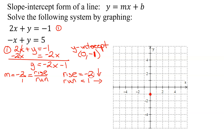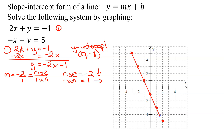Now I need to use my slope of negative 2 over 1. Negative 2 means go down 2, to the right 1. Down 2, to the right 1. And if I need some points up in this direction, instead of going down 2, you go up 2 and left 1 — you just reverse both. So up 2, left 1, up 2, left 1. There is my first line. I'll draw a straight line through it and put arrows on both ends.